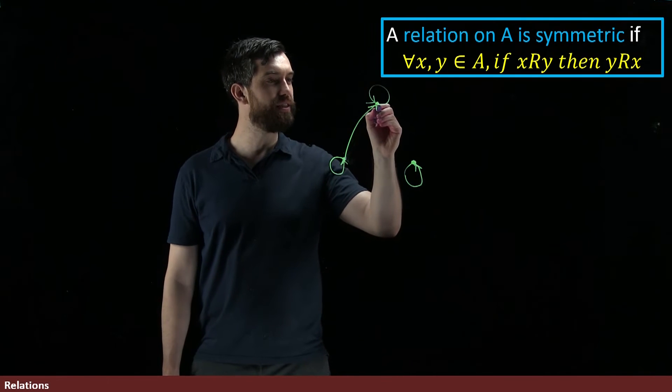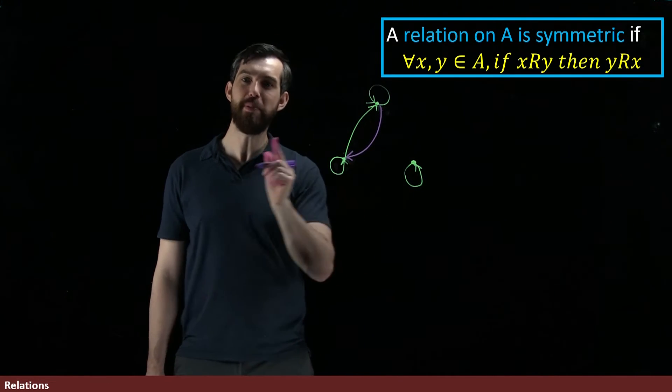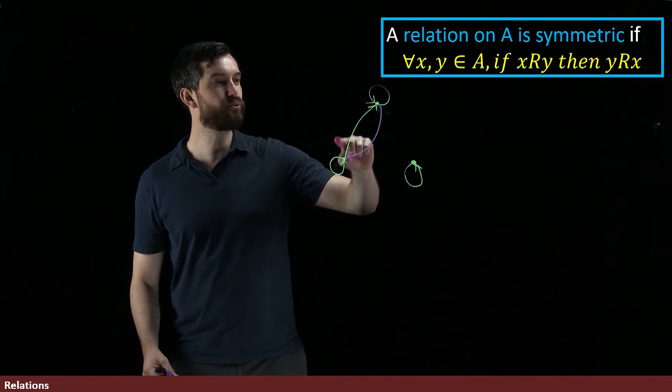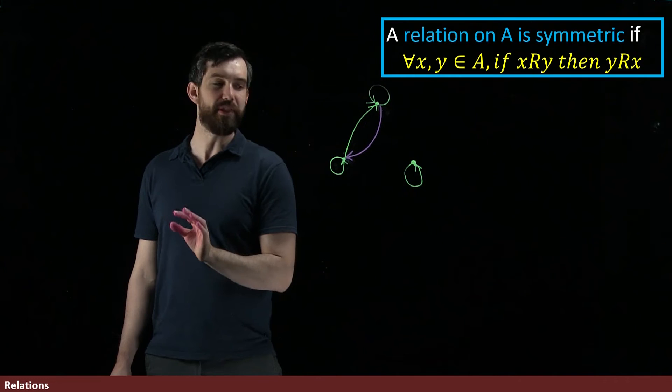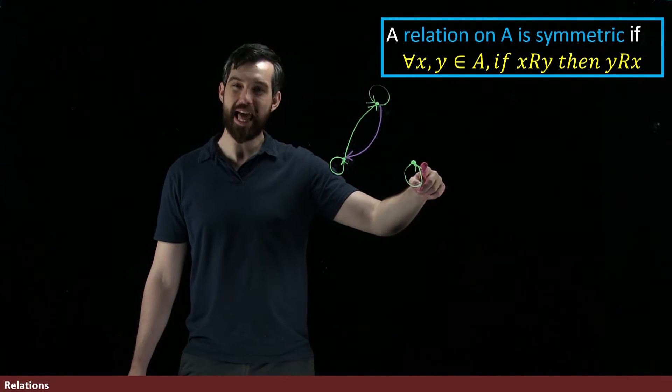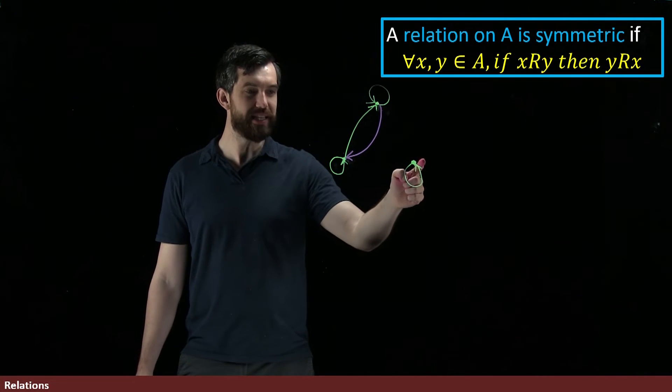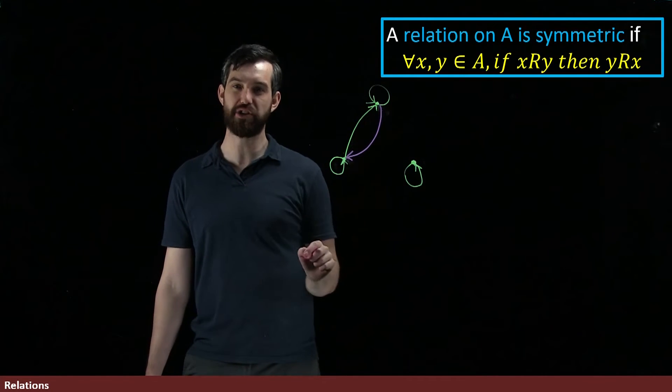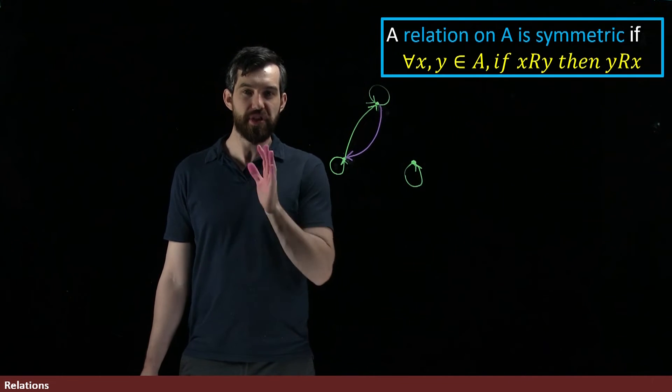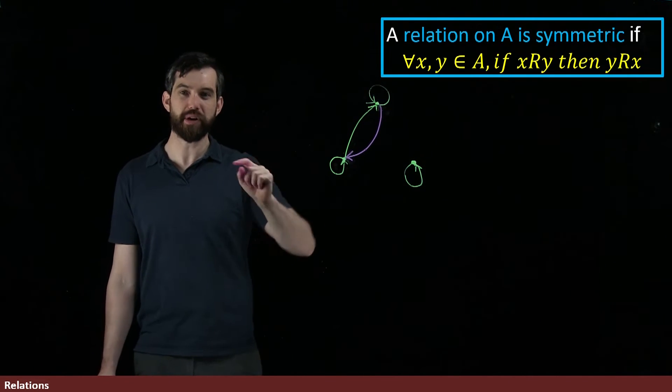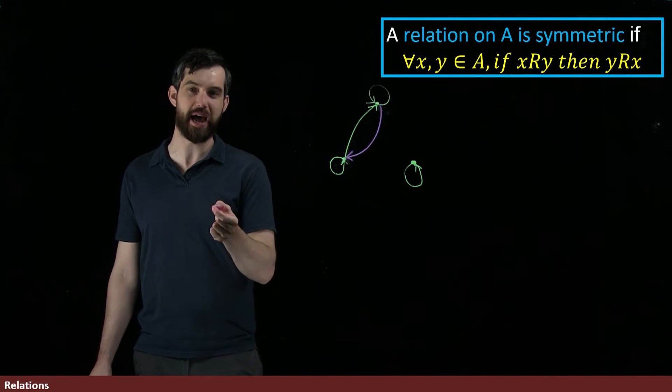However, if I modified this and came in and put an arrow like this, then it would become symmetric because the x related to y and the y was related to x. And note that the fact that this z that I have over here is completely disconnected doesn't matter. Because z isn't related to either the x or the y, I don't have to worry about there being a relation back. So the idea is this: it is symmetric if every time you have an arrow in one direction, it immediately turns around as an arrow coming right back.